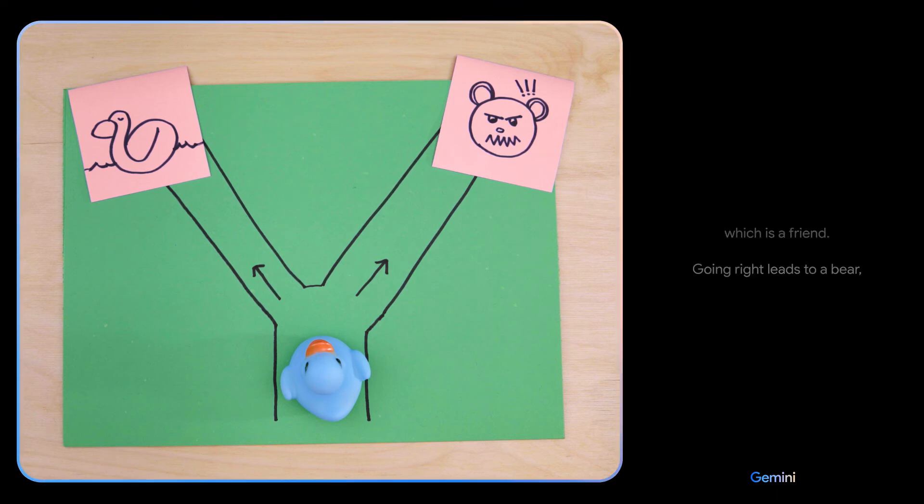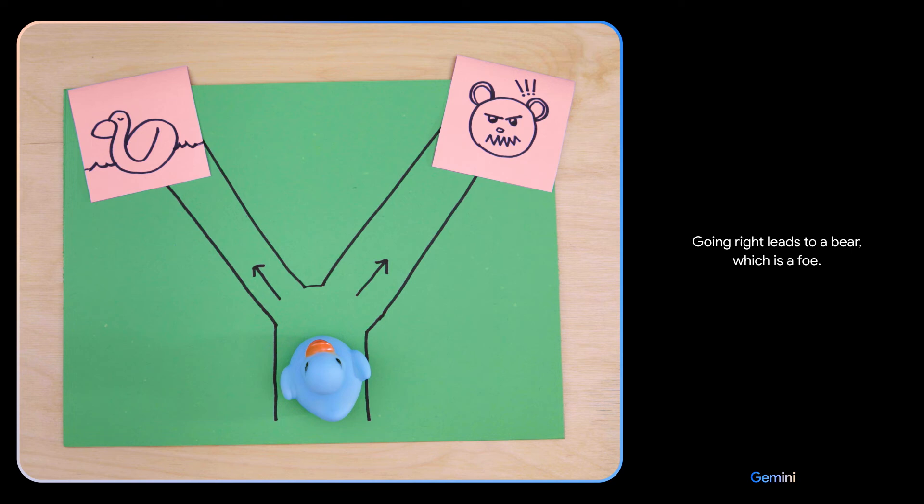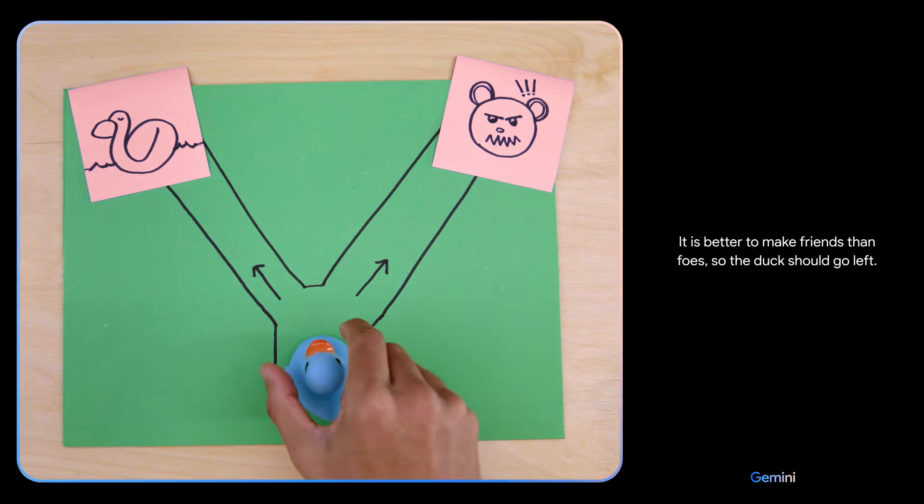Which way should the duck go? Going left leads to a duck, which is a friend. Going right leads to a bear, which is a foe. It is better to make friends than foes, so the duck should go left. Smart choice. This is a picture of a crab. That's right.